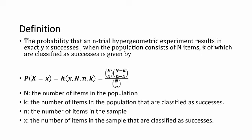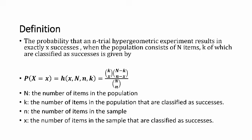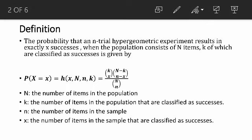By definition, the probability that an N-trial hypergeometric experiment results in exactly X successes, when the population consists of N items, K of which are classified as successes, is given by the following formula. Let me explain that.